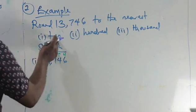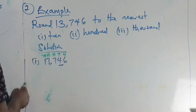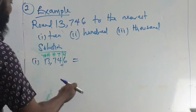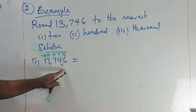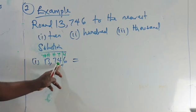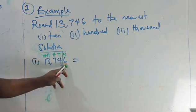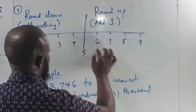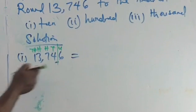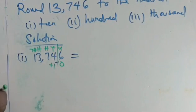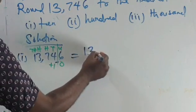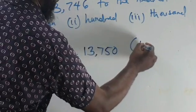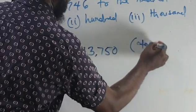To round to the nearest ten, we're stopping at the tens digit, which is 4. We draw a line to divide it. We then consider the next digit after the digit we want to stop at, which is 6. Since 6 falls in the range of five and above, we round up — we add 1 to 4. Then we change everything after it to zero. So the answer is 13,750.